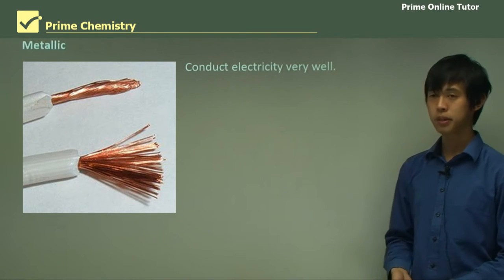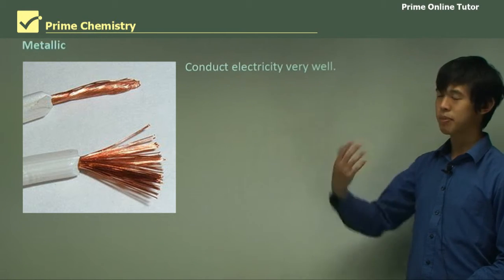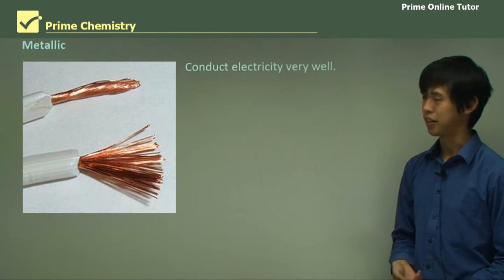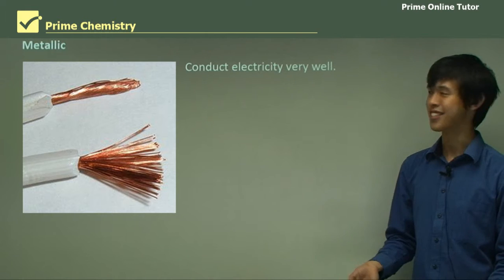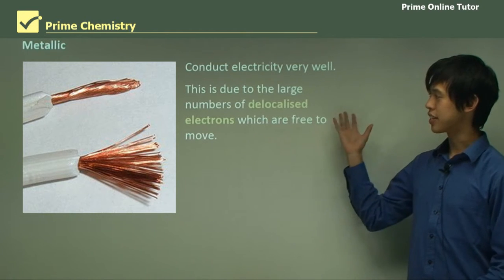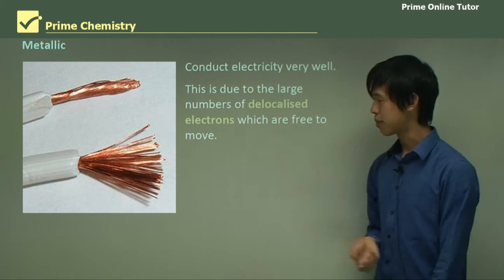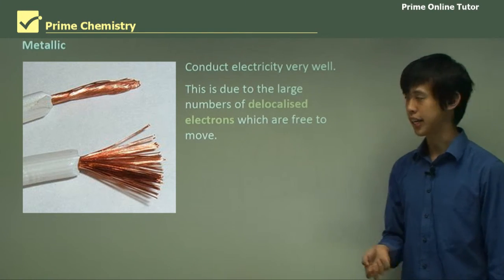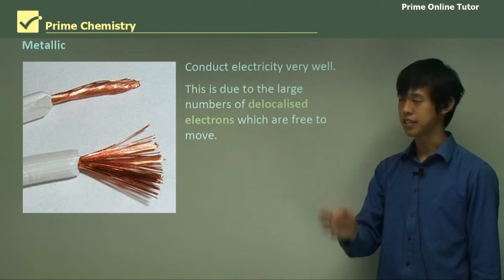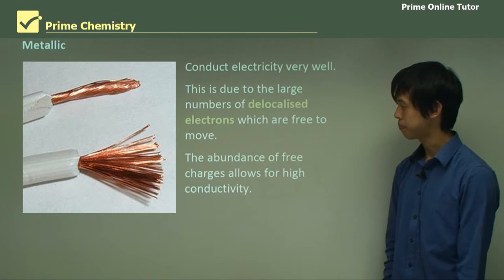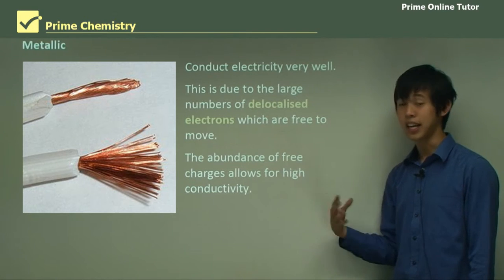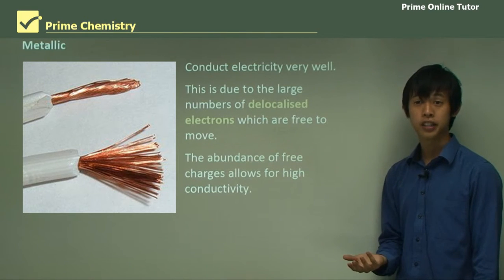Metallic bonds conduct electricity very well — otherwise we wouldn't use metals in our wires. The reason is because of the large number of delocalized electrons which are free to move throughout the lattice of the metal. This abundance of free charges allows for a high conductivity.